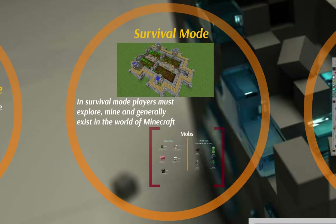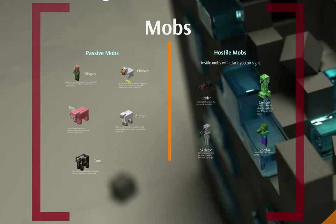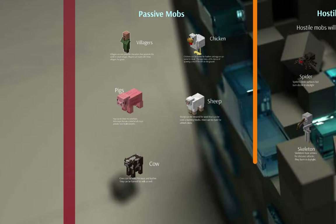The other version is survival mode, where you have to fight monsters, manage health, and basically survive. A lot of it comes down to mobs — the non-playable characters in the game. There are two types: passive mobs are friendly. You have livestock you can gather food from and breed. Interestingly, sheep come in many colors, and breeding them together will show Mendelian genetics with dominant and recessive traits, so there are interesting learning opportunities if you look for them.